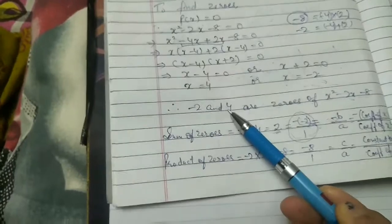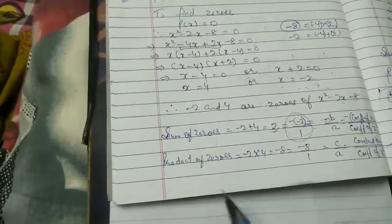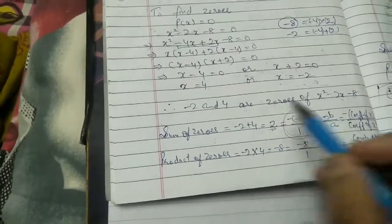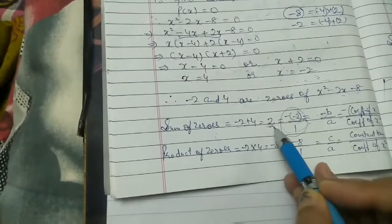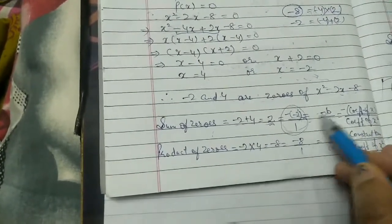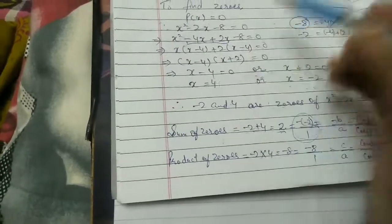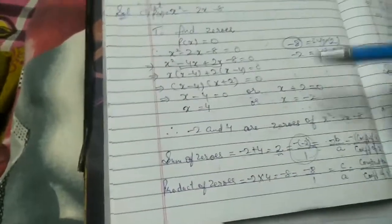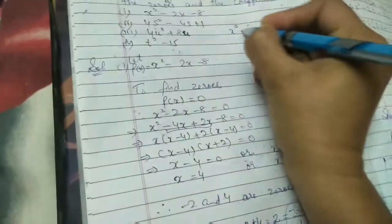Now we verify. Sum of zeros: -2 + 4 = 2. According to the formula, sum of zeros equals -b/a, where b is the coefficient of x.